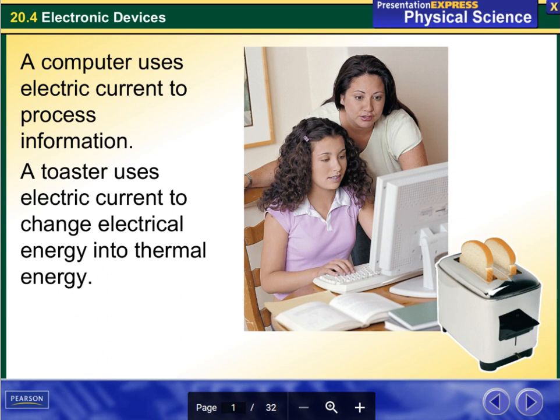A computer uses electric current to process information. A toaster uses electric current to change electrical energy into thermal energy.